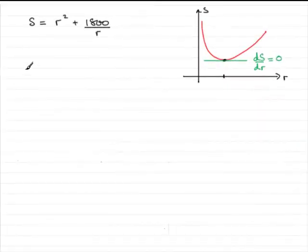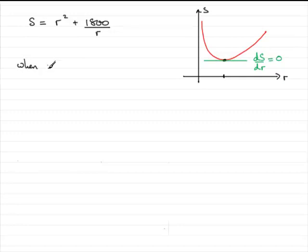Now for this last part of the question, we've just got to work out what the minimum value of S was. Well, we already found out that the minimum value of S occurs when R is equal to 9.6548. So all we need to do is substitute this into the equation.